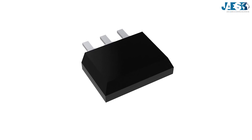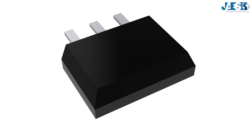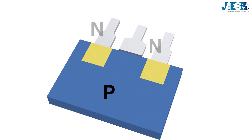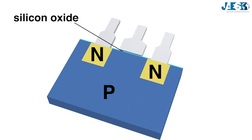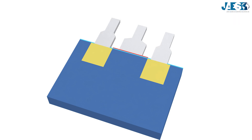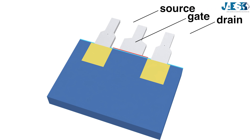The MOSFET transistor is composed of a doped silicon wafer, as shown, with one P-type and two N-type semiconductor parts, a layer of silicon oxide which acts as an insulator, and a conductive layer of polycrystalline silicon. Every transistor has three terminals: the central one is connected to the polycrystalline silicon and is called the gate, while the other two are connected to the two N-type wafer parts and are called source and drain.